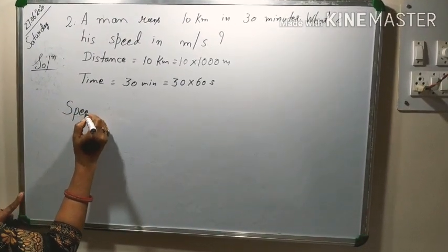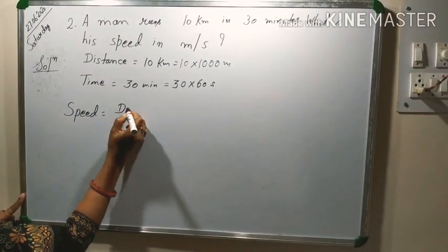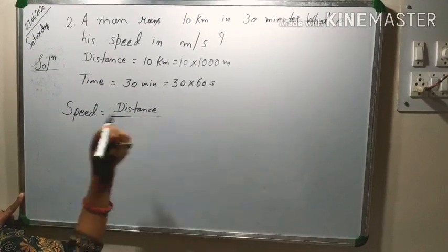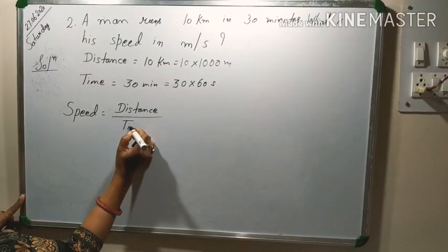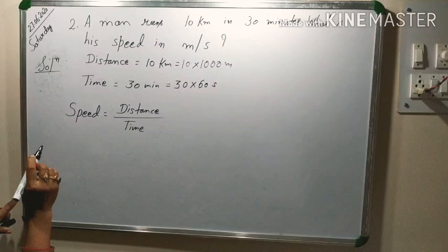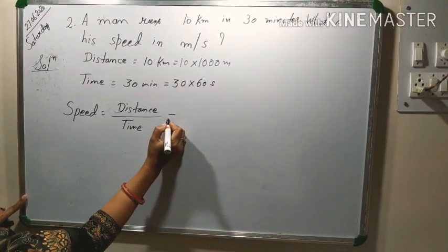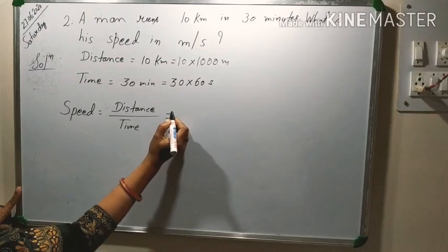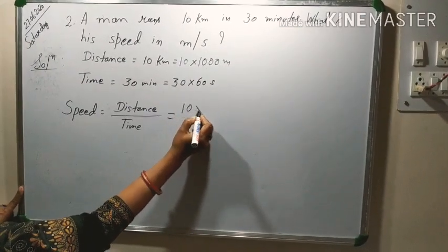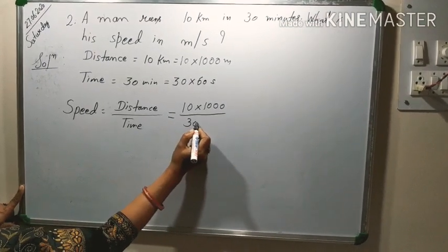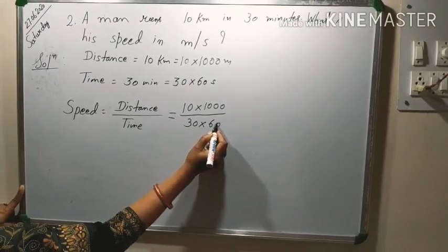Speed, you know, it is distance by time. In previous video I told you that never write direct. First you have to collect. First you have to mention the formula. We will put the value 10 into 1000 over denominator 30 into 60.